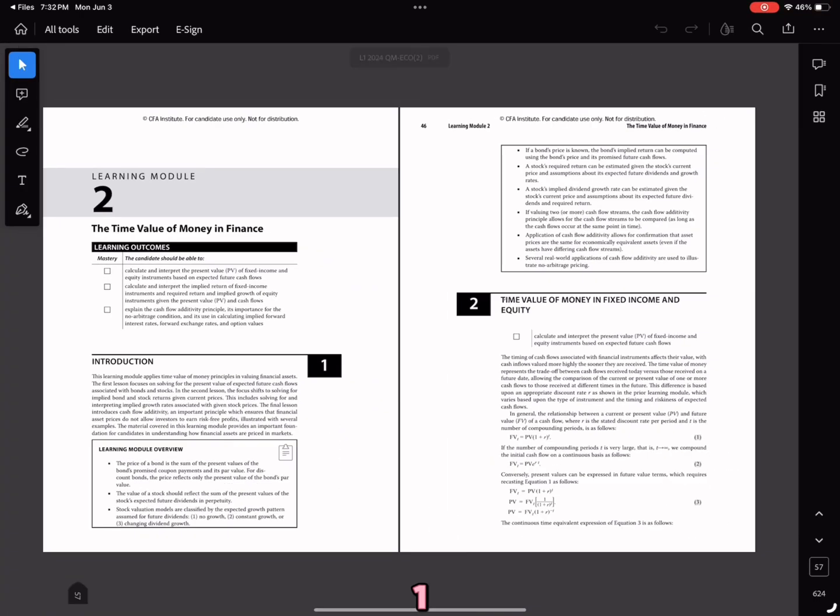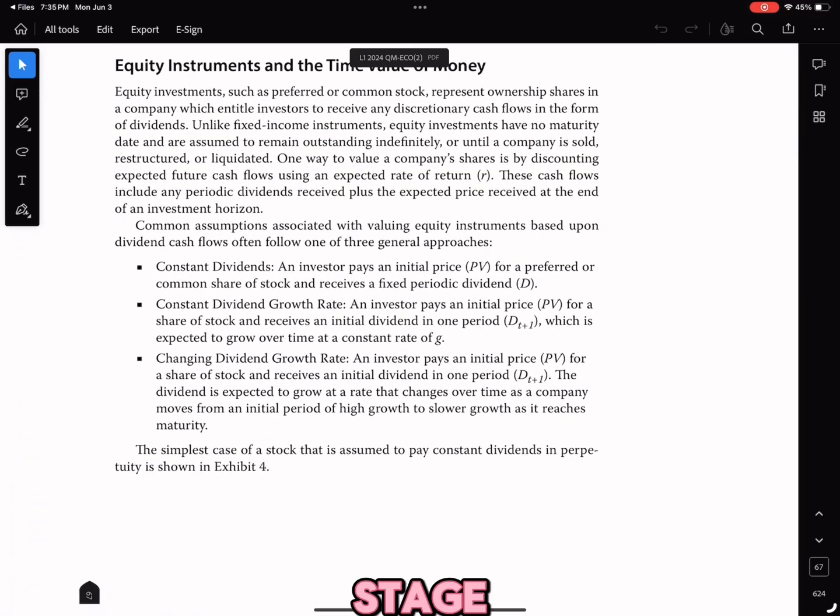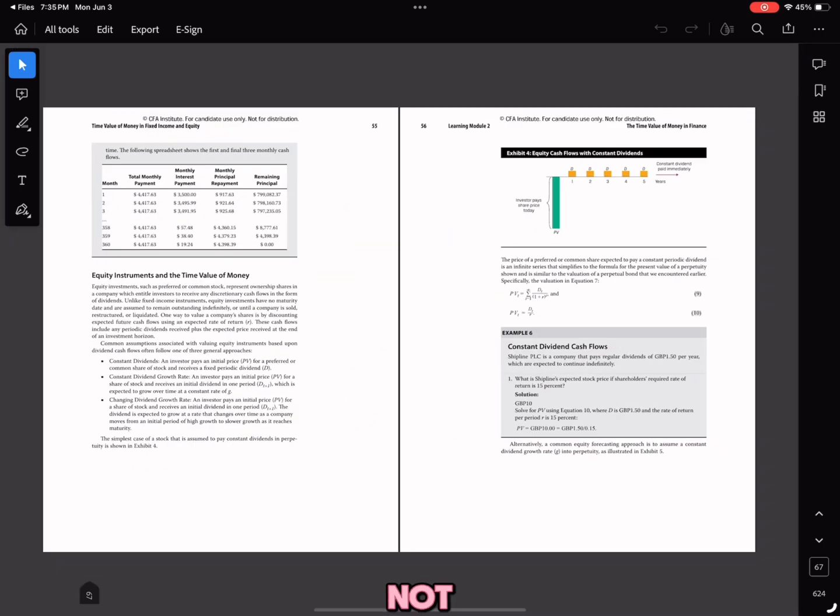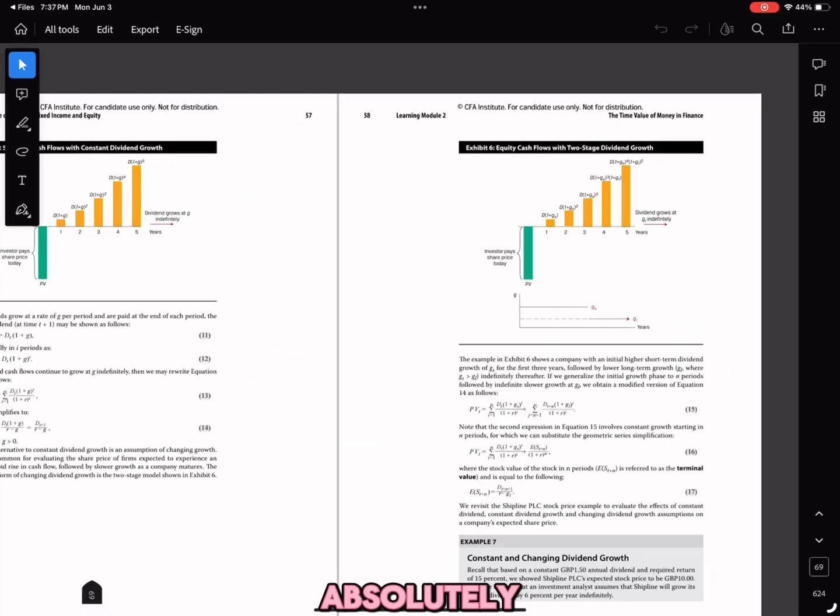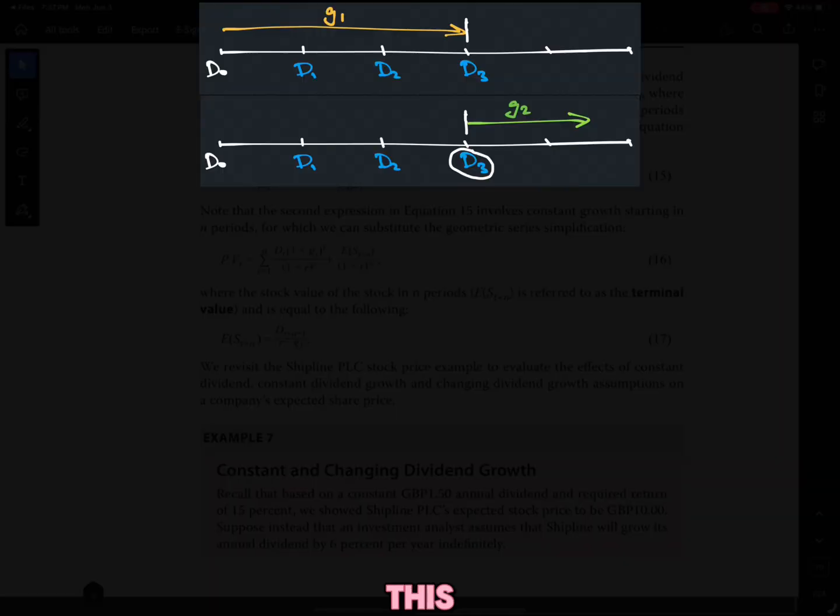From reading 2 in the CFA Level 1 curriculum, the easiest way to do the multi-stage dividend growth is to not use what the CFA curriculum teaches, because they do an absolutely poor job at preparing you. Use this instead.